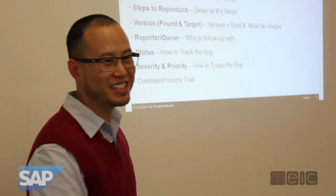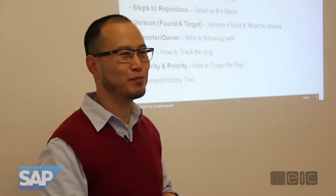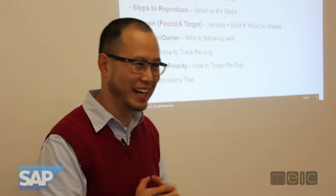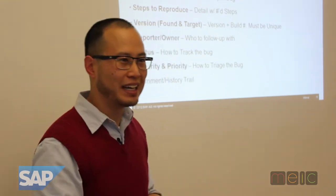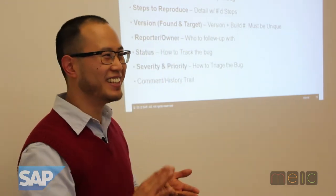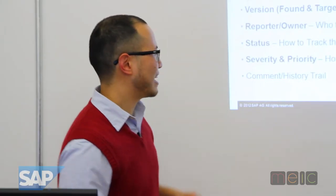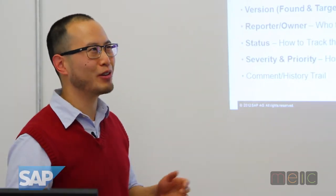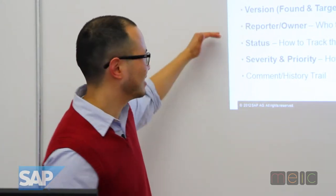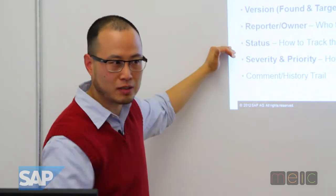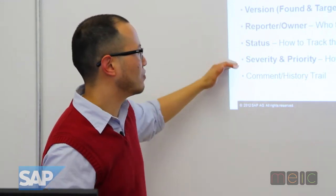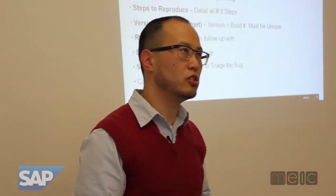Report owner — who to follow up with. That needs to be there because you need ownership. Bugs are bad if you never get a chance to follow them up and people can say whatever they want. Anonymous is bad. Status — this is how to track the bug. Remember we talked about the states? That has a lot to do with that. Severity and priority — we're talking about triage. Let's pick the ones up by priority.